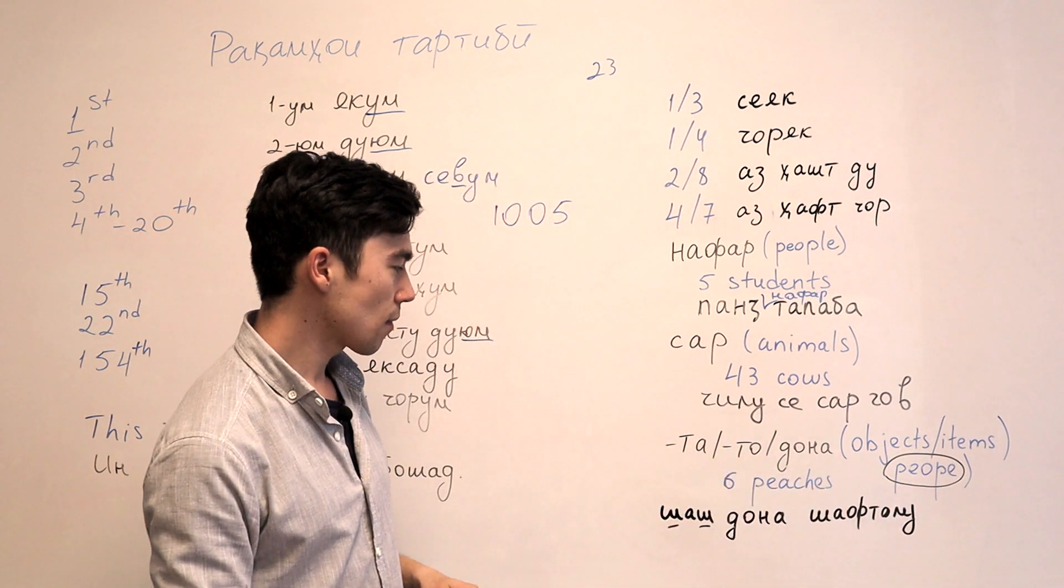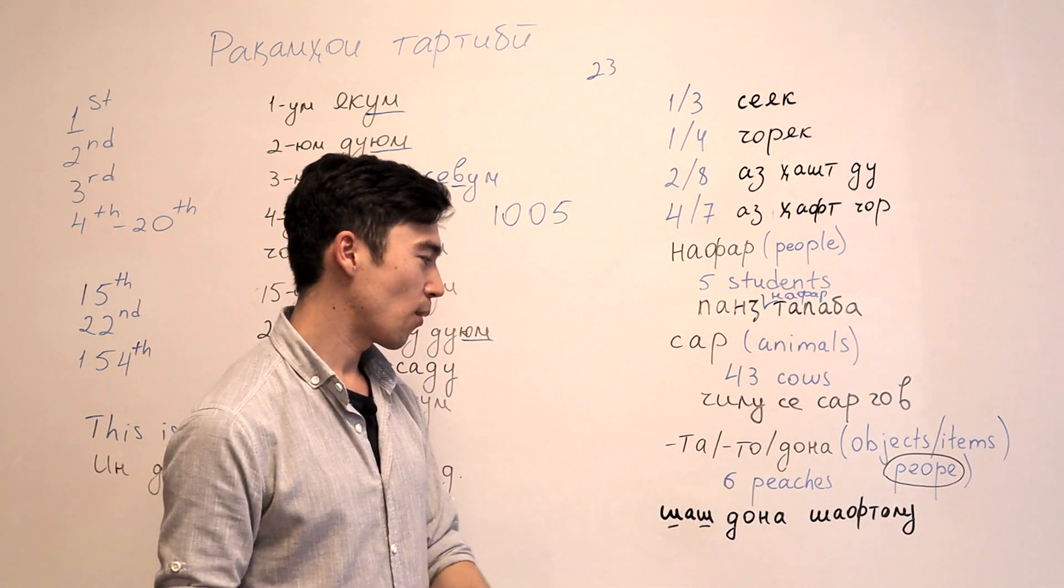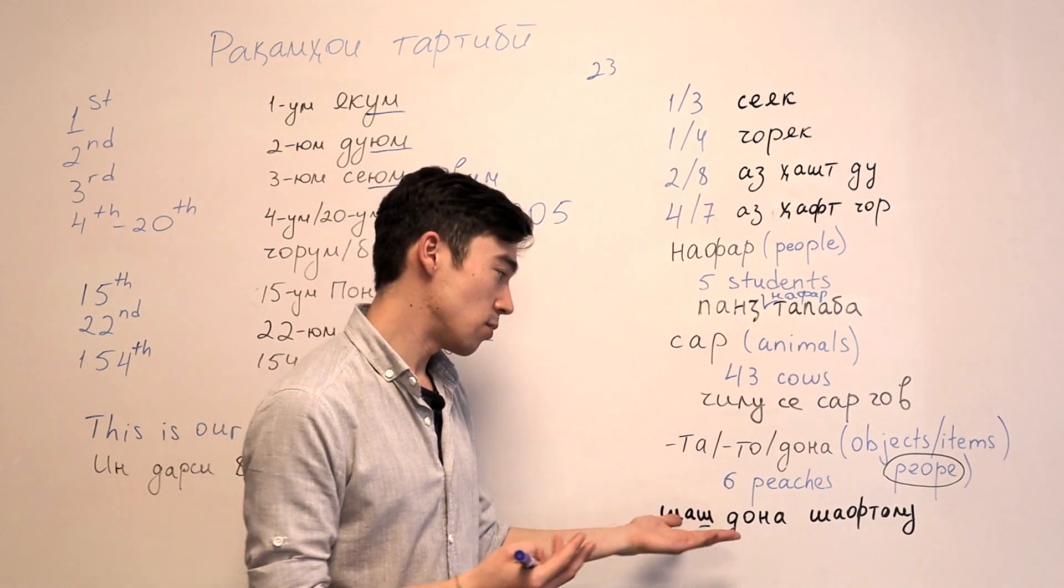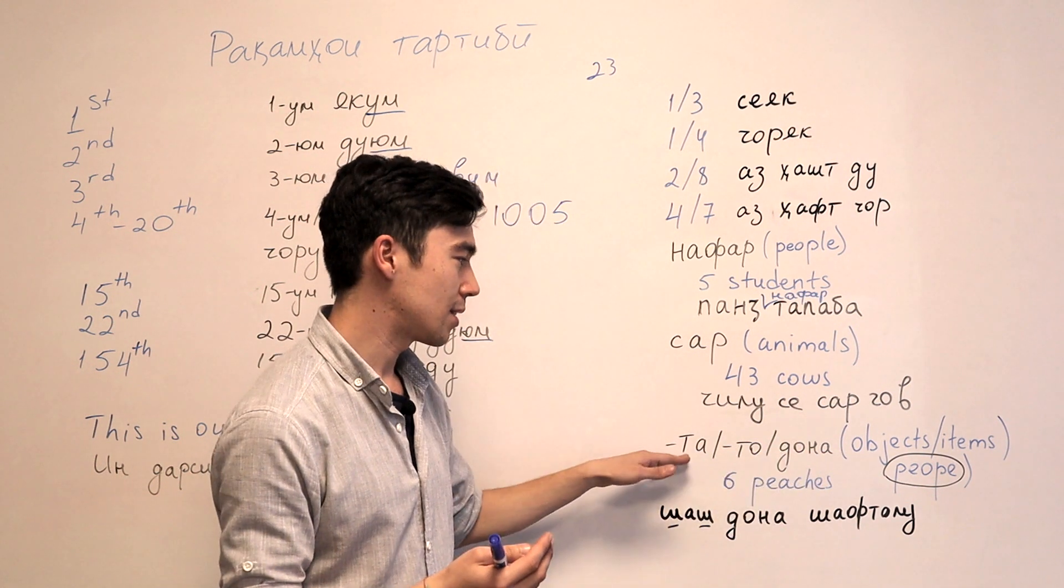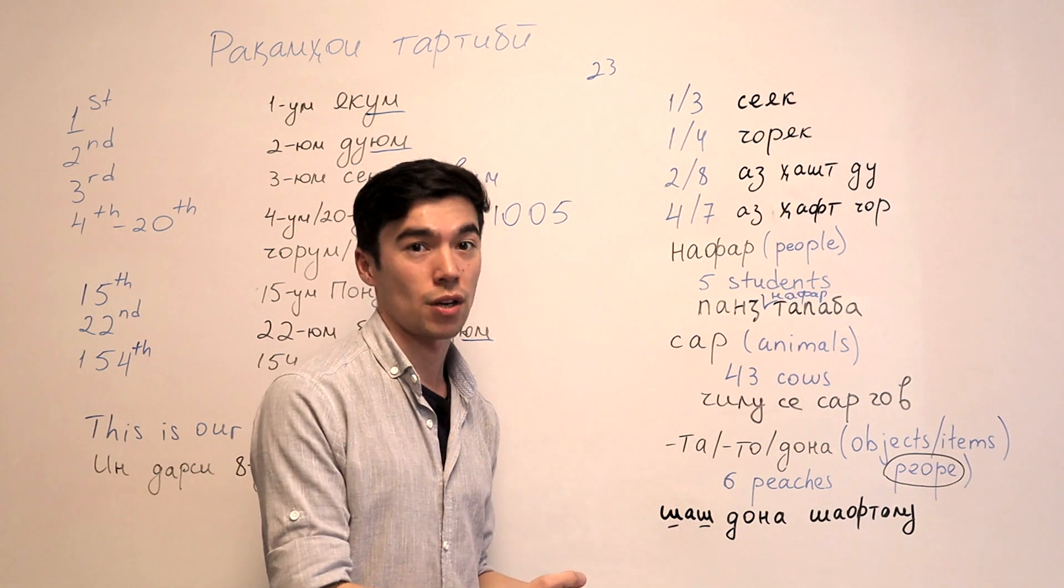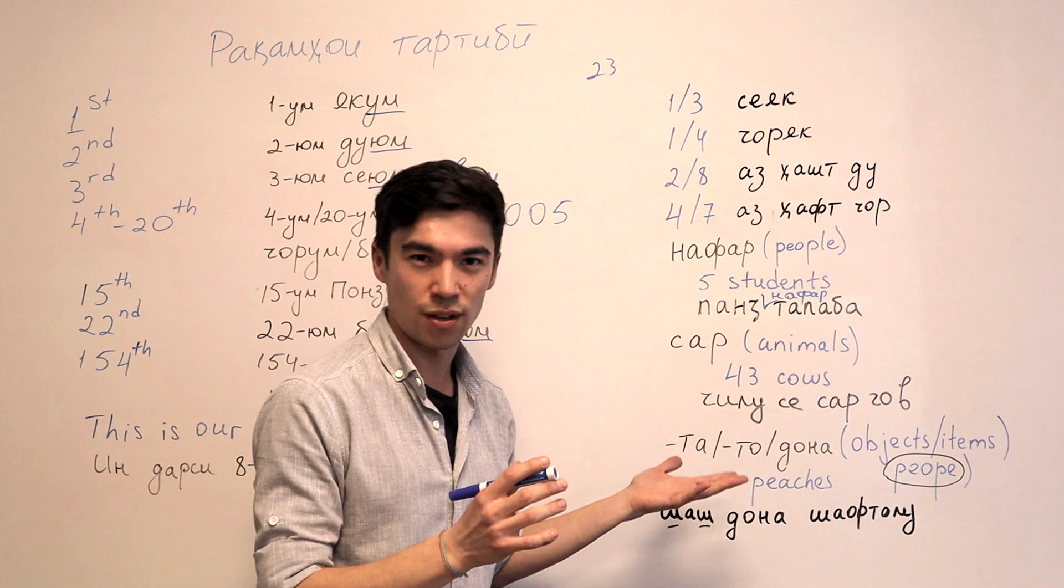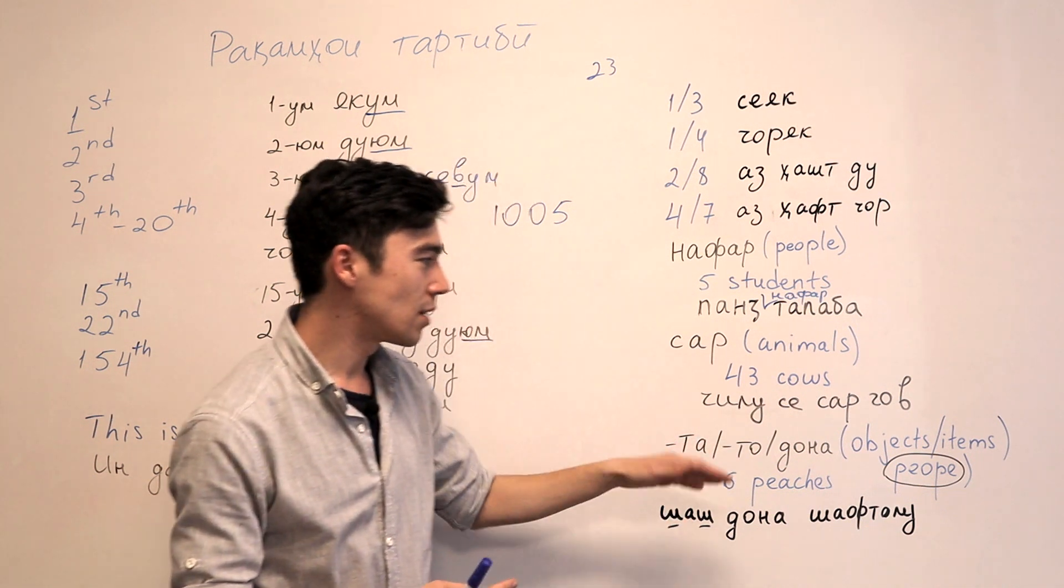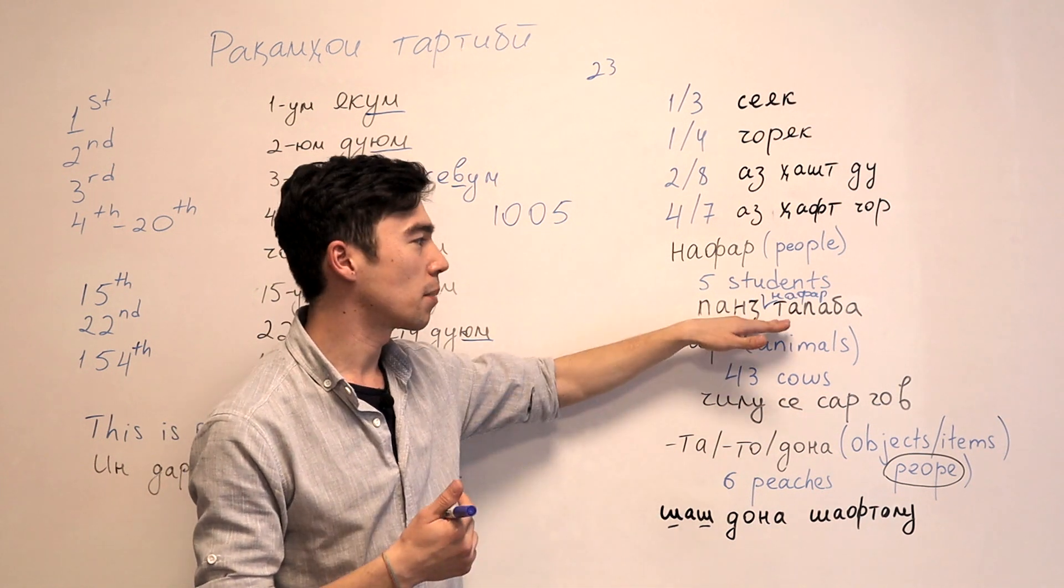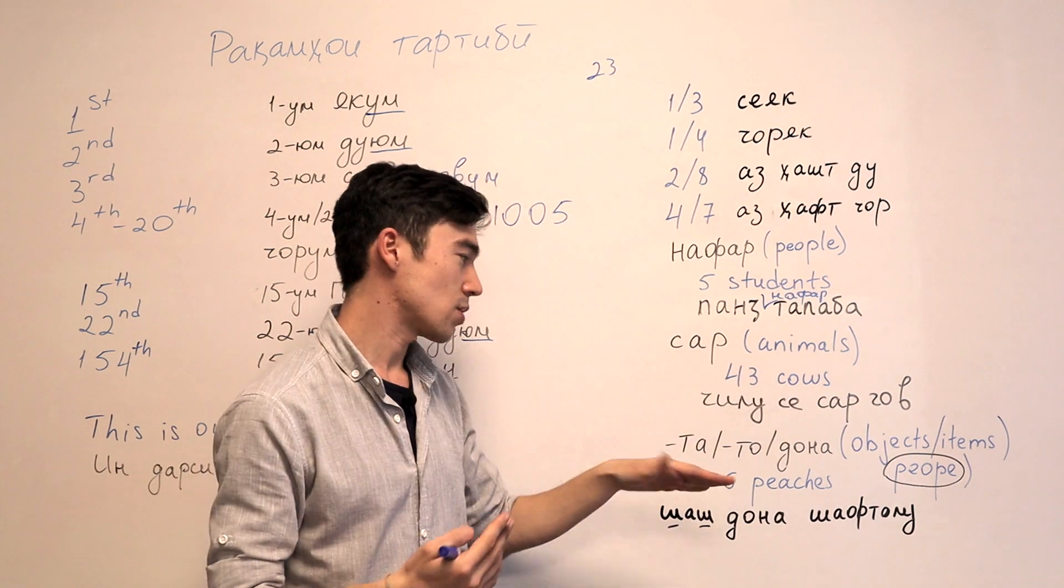So, for example. SHASH DONA SHAVTULU. It means six peaches. So, here I said DONA. Maybe in the books you will see DONA. But usually people say TA. We say, for example, in my hometown we say SHASHTA SHAVTULU. We don't say DONA usually. We usually say TA. And the same for animals and for people. We just say TA. Like SHASHTA TALABA. CHILUSESTA GO. People will still understand you if you use TA.